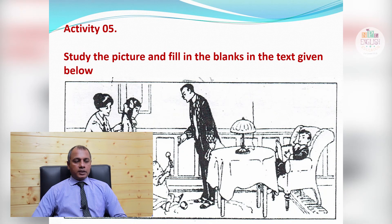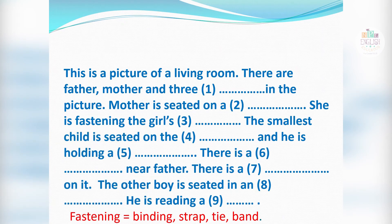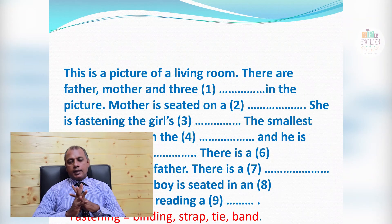Activity Five: Study the picture and fill in the blanks in the text given below. The picture is about a family in a living room. 'There are father, mother, and three children. Mother is seated on a stool and is fastening the girl's hair. The smallest child is seated on the floor and is holding a toy. There is a table near father with a lampshade on it. The other boy is seated in an armchair and is reading a book.'